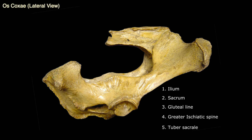Oscoxae lateral view. Note the pelvic girdle with the sacrum. The ilium is the largest of the three bones of oscoxae. It is irregularly triangular in shape. Note the sacrum, which is wedged in between the two ilia. It forms the roof of the pelvic cavity.